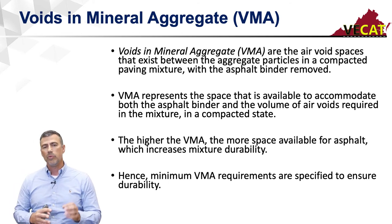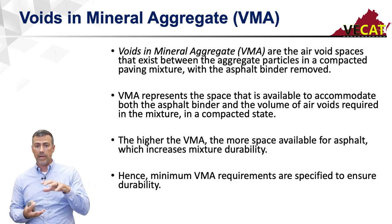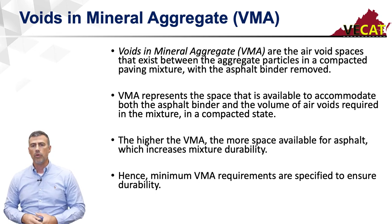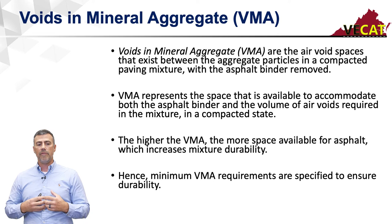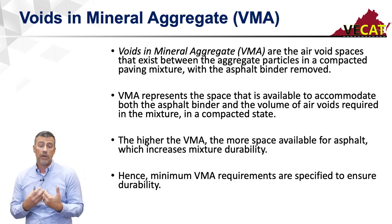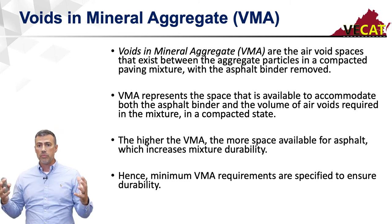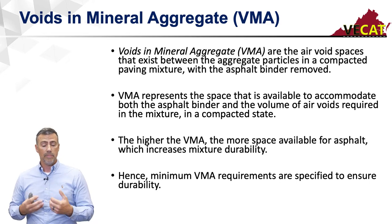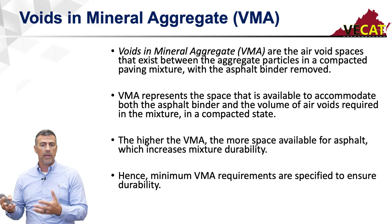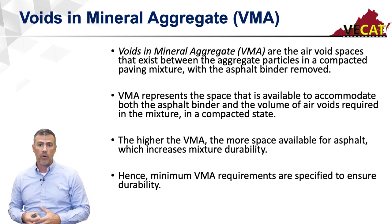Now the VMA — voids in the mineral aggregate structure. Again, that's the air spaces between the aggregate particles in a compacted mix, if you took all the asphalt out. It represents both the availability to accommodate liquid asphalt as well as air voids. It's important to have enough VMA to get asphalt into the mix, but not too much. Typically, a higher VMA means more space available for asphalt, allowing for better durability — though too high on VMA can cause loss of stability. Most specifications give us a minimum VMA requirement to ensure sufficient asphalt in the mixture for durability.